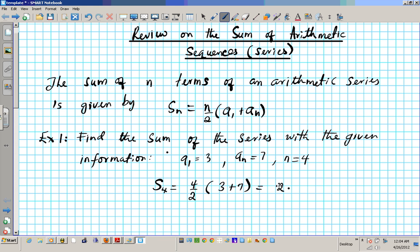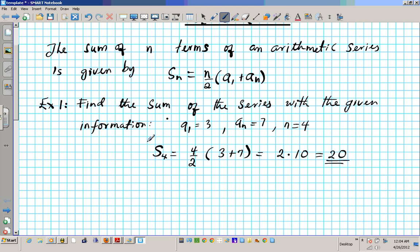4 over 2 is 2, 2 times 3 plus 7 is 2 times 10, and then the answer is 20. And that is how you compute the sum of an arithmetic series.